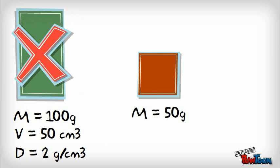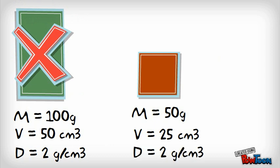The volume also gets cut in half, so now the volume is 25 cubic centimeters. When you use the formula, we end up with the same result. The density is 2 grams per cubic centimeter.